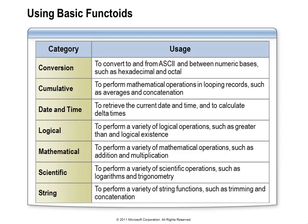The BizTalk Mapper provides a wide variety of functoids in the toolbox: encoding conversion functoids, cumulative value functoids for averages and sums, a functoid for cumulative string concatenation, date and time functoids, logical functoids for conditions like greater than or less than with AND and OR operators, mathematical functoids with all common operators, scientific functoids for sine and cosine calculations, and string manipulation functoids for concatenating, trimming, extracting substrings, and determining string length.